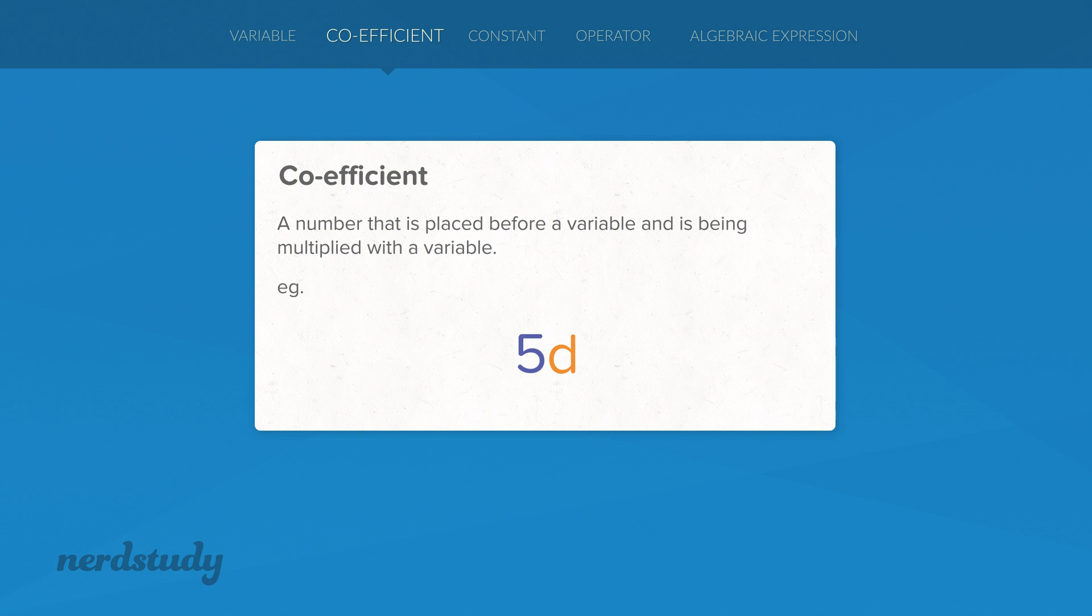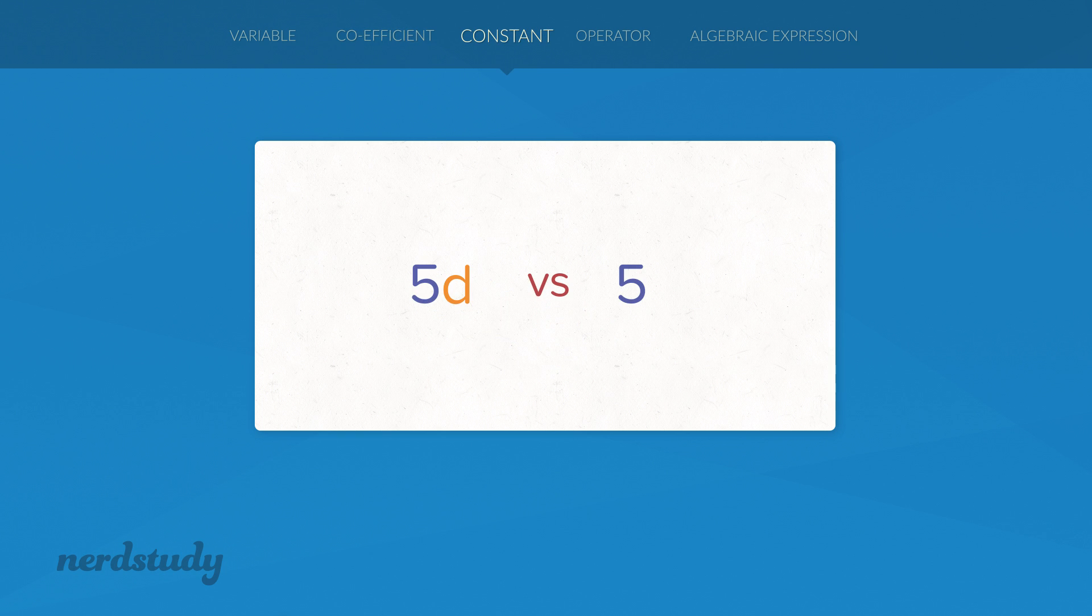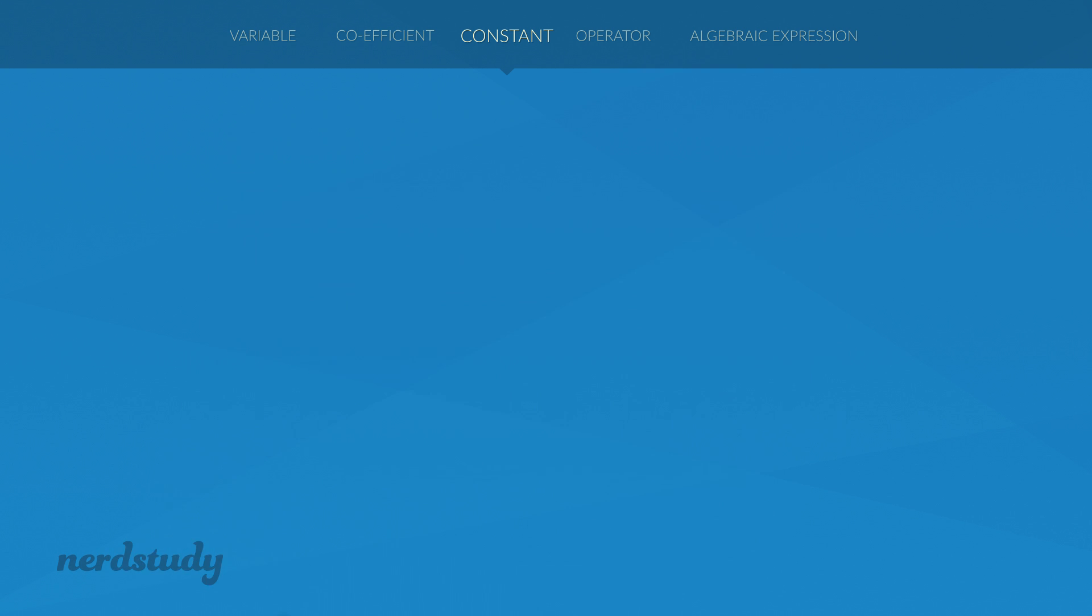Be sure not to confuse a coefficient with a constant. A constant is just a standalone number. It is a fixed value. Since it's not a variable, and it's not being multiplied by a variable, the value of a constant does not change.